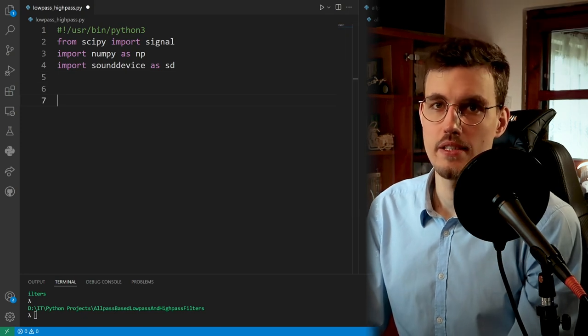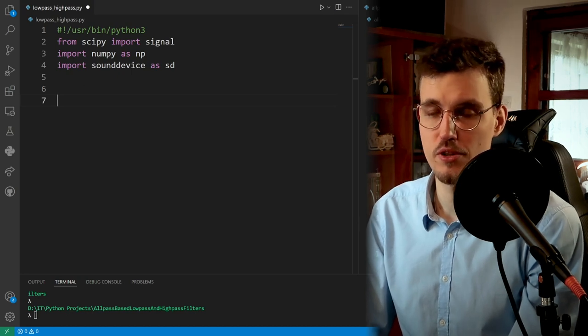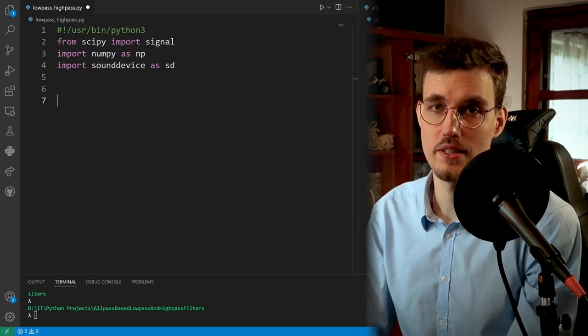Now we'll define some constants that we need during processing. The first one is sampling rate, which will be 44.1 kHz.